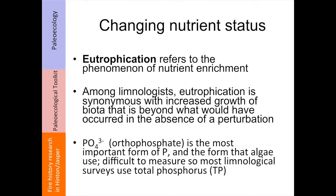One of the things Katrina is going to investigate is looking at changing nutrient status. Everybody's probably heard of eutrophication — nutrient enrichment of lake systems normally associated with people. But you can certainly get eutrophication associated with fire events, where phosphorus is released from the soils and deposited into the lakes, changing those lake ecosystems. Eutrophication is synonymous with increased growth of biota, whether we're talking about plants lining the bottom of the lakes or the algae living within those lakes, and you can get algal blooms associated with these events.